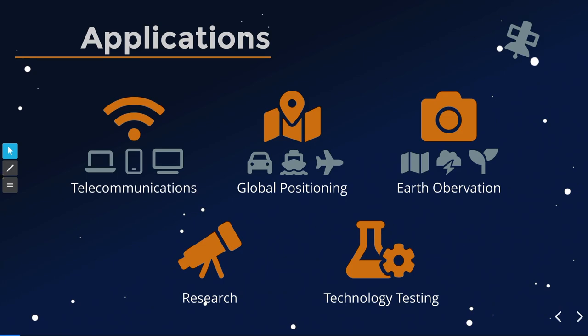So why are satellites even an interesting topic? Satellites and satellite services have become a pretty vital part of our modern lives — starting with telecommunications like TV services, internet services, and upcoming phone services from space. Global positioning services like GPS, Galileo, and GLONASS are used on basically everyone's mobile phone. Earth observation images are used in mapping, weather forecasting, agricultural forecasting, and many more. Satellites also enable scientific research and technology testing in space.